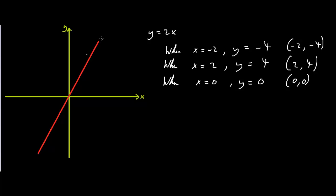So let's write y equals 2x here. As you can see, the m in this equation is 2, and m is greater than 0. That is why the slope of this line here is positive.